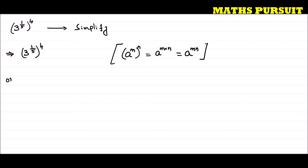Applying the identity, the given expression can be written as 3 to the power 1 upon 5 into 4, which equals 3 to the power 4 upon 5. So our answer is 3 to the power 4 upon 5.